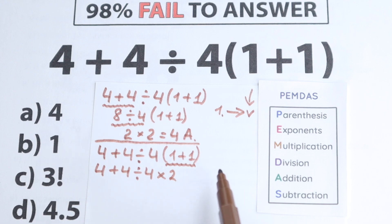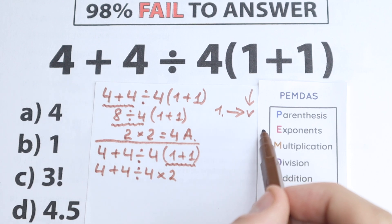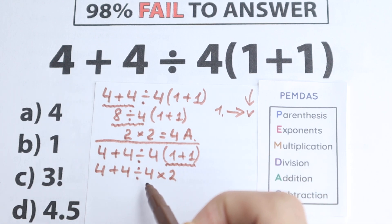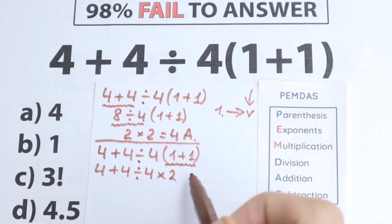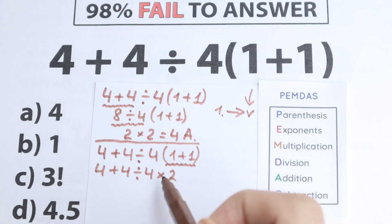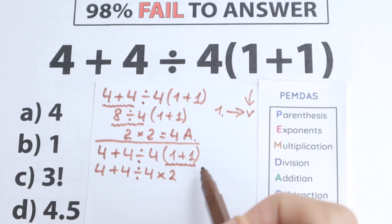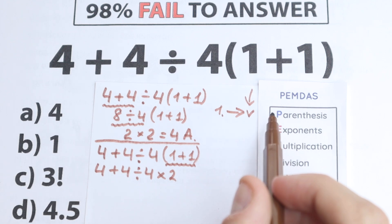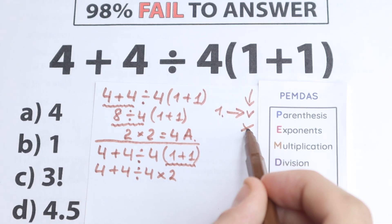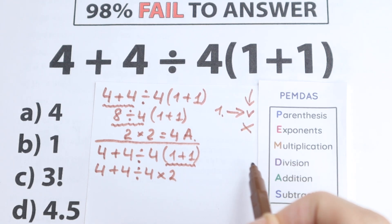The next step is Exponents. Do we have any exponents — squares, fifth powers, tenth powers, seventh powers? No, I don't see any. We don't have any exponents here, so we skip this step.